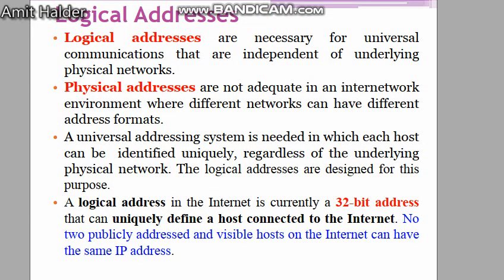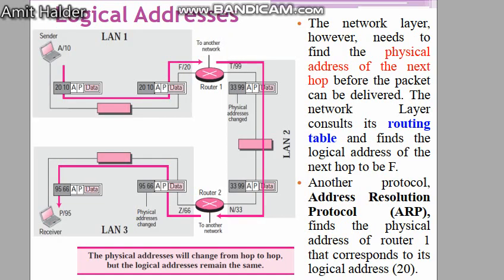Logical addresses are necessary for universal communications that are independent of the underlying physical network. Physical addresses are not adequate in an internet environment where different networks can have different address formats. A universal addressing system is needed in which each host can be identified uniquely regardless of the underlying physical network. A logical address is currently a 32-bit IP address that can uniquely identify a host connected to the internet, and no two publicly visible hosts can have the same IP address.